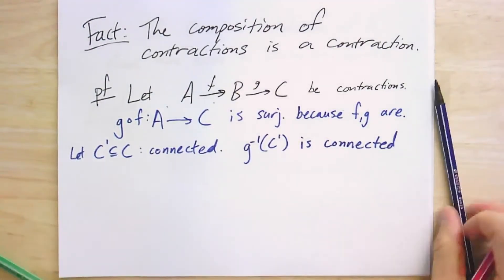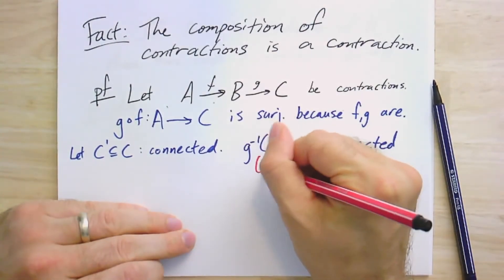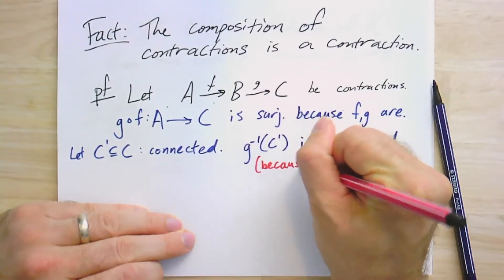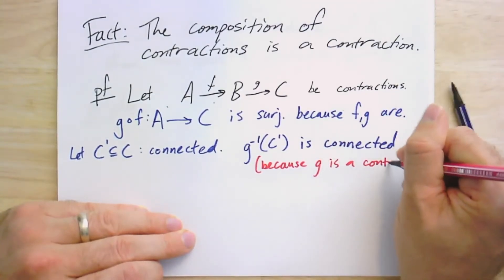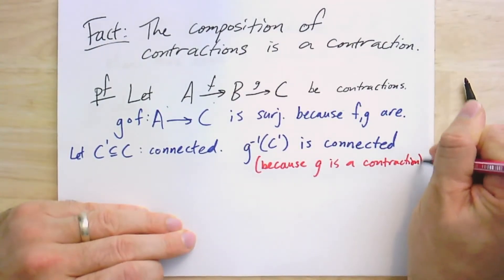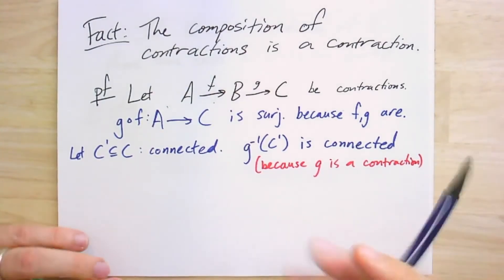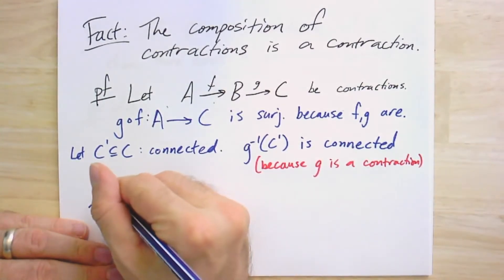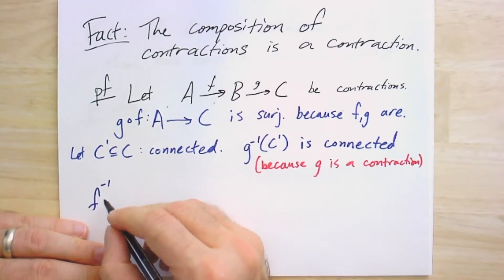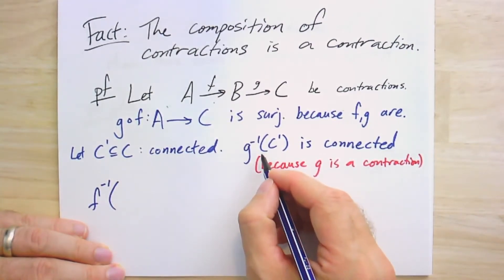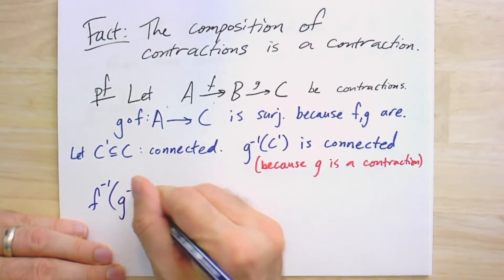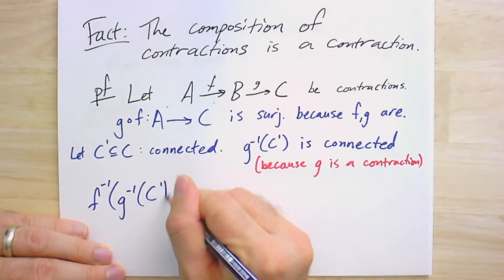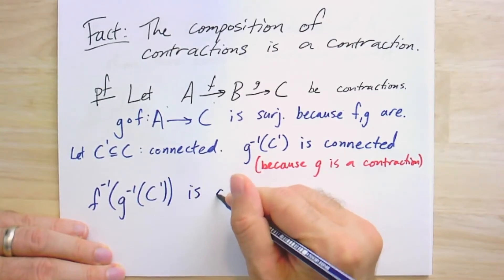And this is, again, by definition of what it means to be a contraction and because G is a contraction. It follows, then, that F minus 1 here, the preimage of this subgraph of B is also connected. And here, we're just using the fact that F is a contraction.